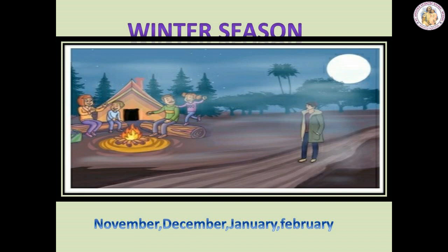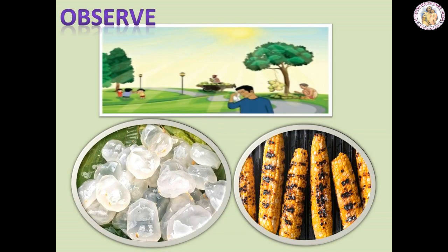Students, now you can choose which food is suitable for the seasons. What is the season here? It is the summer season. Here we have ice apple and hot corn. The summer day will be very hot. Since it is hot, we will choose ice apple. Ice apple is the suitable food item to take during summer.